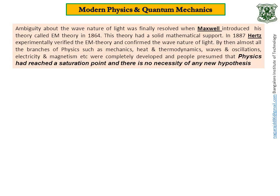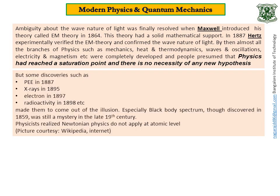But in 1887 itself, Hertz discovered one more property of the light that is photoelectric effect and photoelectric effect in fact reopened the issue. Not only that, many more discoveries such as X-rays in 1895, electron discovery in 1897, radioactivity in 1898 made them to come out of the illusion.